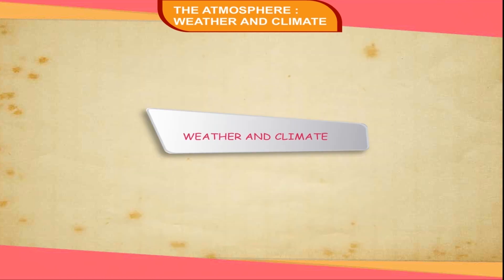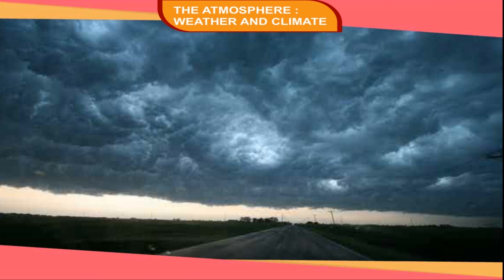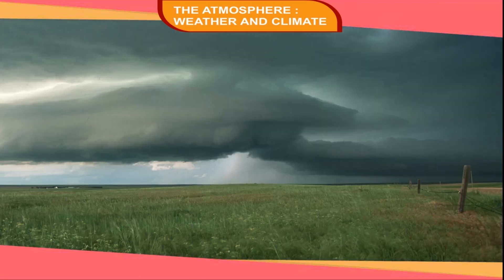Weather and Climate. The terms weather and climate are very closely related to each other, but weather should not be confused with climate. Weather can be defined as a particular condition of the atmosphere prevailing over a small area at a particular period of time. Weather is dynamic and changes within a short period of time. When we speak of climate, we mean the average atmospheric conditions of a particular area. Climate can be defined as the sum total of all the weather conditions prevailing over a large area over a considerably long period of time.